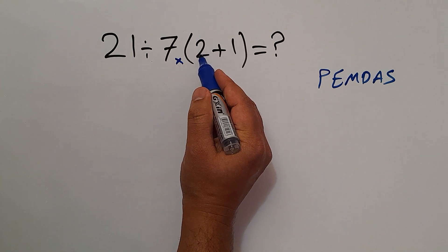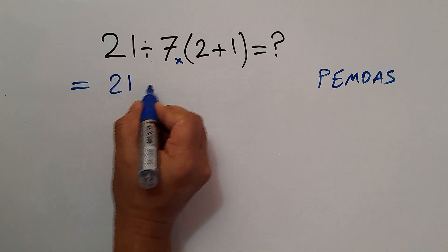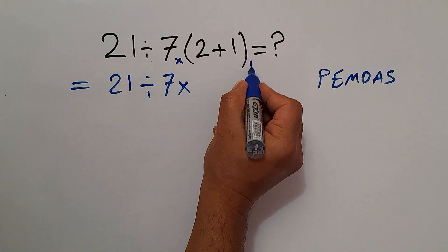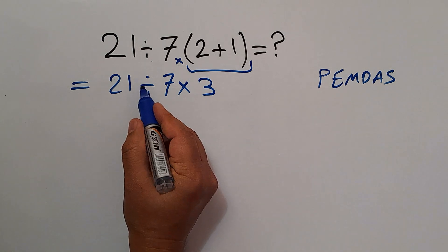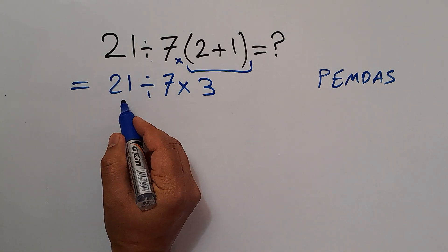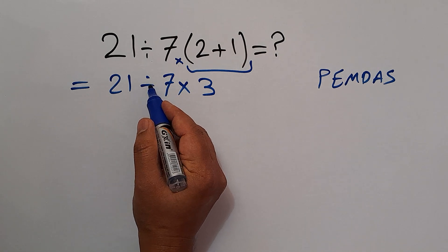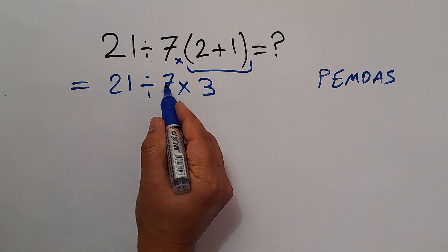So 2 plus 1 equals 3. 21 divided by 7 times 3. We have to do this division because multiplication and division have equal priority and we have to work from left to right. So 21 divided by 7 equals 3.